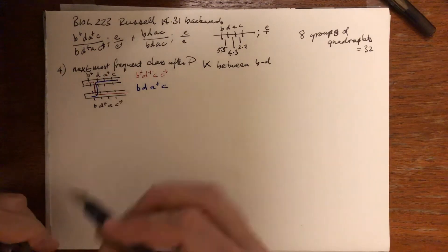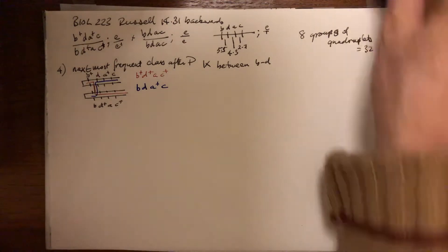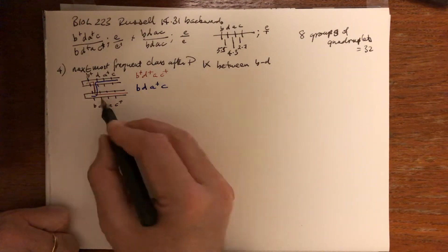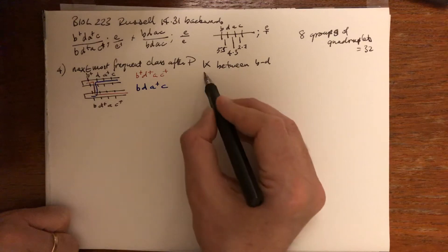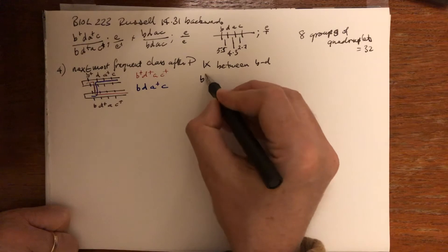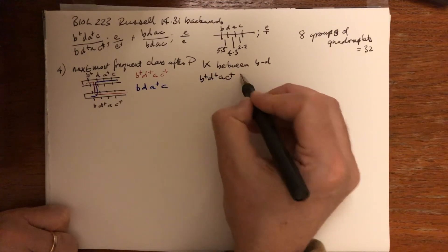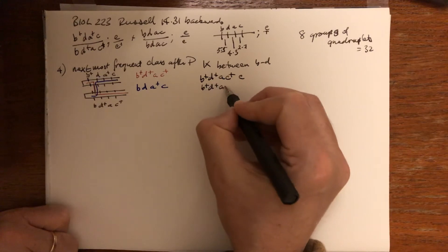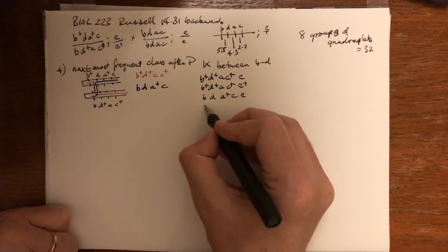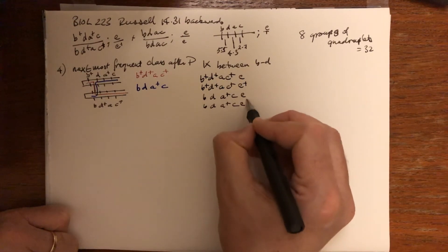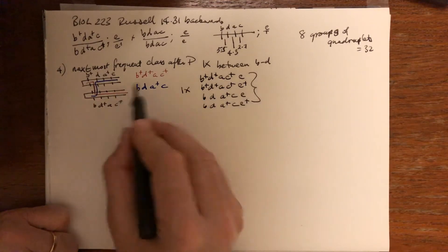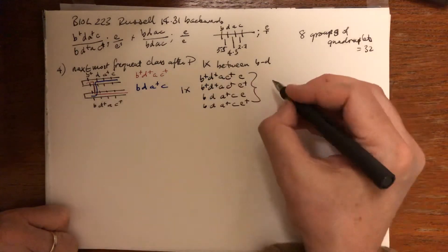Therefore, along including also locus E, which is independently assorting, the product here of this most frequent single crossing over class will be B+ D+ A C+ E, B+ D+ A C+ E+, B D A+ C E, B D A+ C E+.